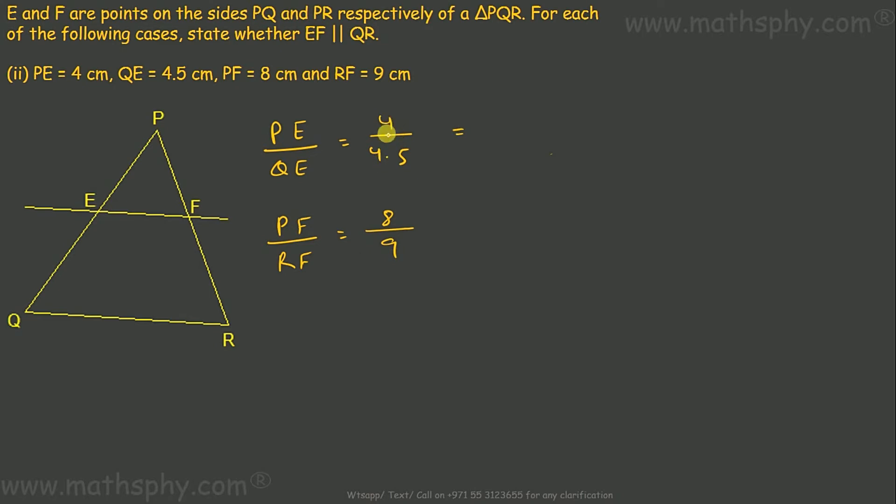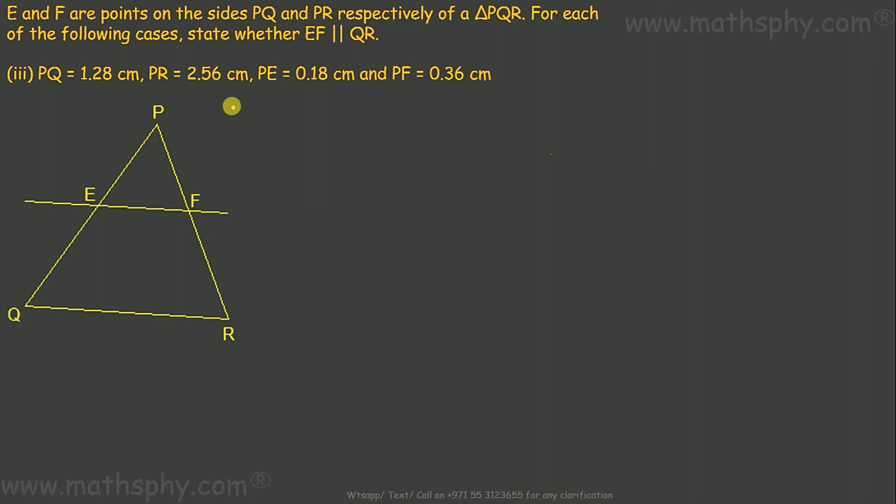Let's multiply both the numbers by 2, means numerator by 2, denominator by 2, or 4 over 4.5 into 2 over 2. So this becomes 8 over 9. This is also 8 over 9, means PE over QE is equal to PF over RF. So EF is parallel to QR.